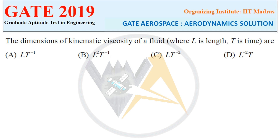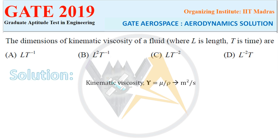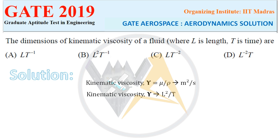Next question: what are the dimensions of kinematic viscosity of a fluid, where L is length and T is time? Recalling that kinematic viscosity ν equals dynamic viscosity μ divided by density ρ, the unit of kinematic viscosity is m²/s. Converting to dimensions, we get L²/T. So the right answer is option B.